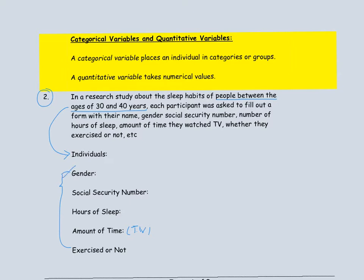Let's look at the first piece of information they're going to fill out: gender. Gender is female or male. This is not a quantity or a measurement — it's not a numerical value that is a measurement. So it is still a variable because gender differs from one individual to another, possibly. So it is not a quantity; it's a non-quantitative variable, called a categorical variable.